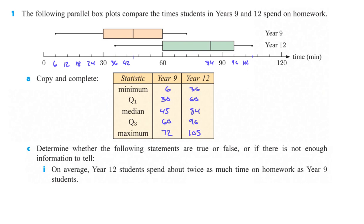Part C, determine whether the following statements are true or false, or if there's not enough information to tell. On average, year 12 students spend about twice as much time on homework as year 9 students. That's not the easiest thing to tell. I mean, you can look at the median, but it's such a wide range, 36 to 105, and there are 45 to 72. I don't know. I would say that's probably not enough information to tell.